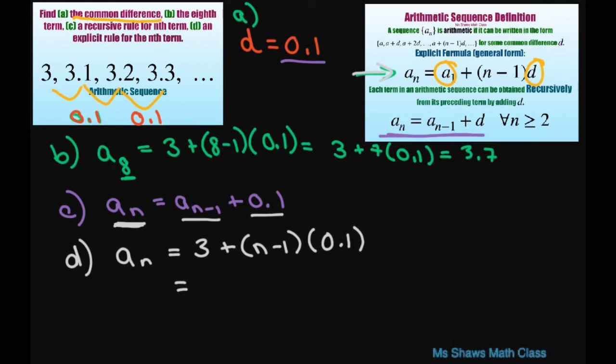So this is going to equal 3 plus 0.1n minus 0.1. This is going to simplify to A sub n equals 0.1n plus 2.9.